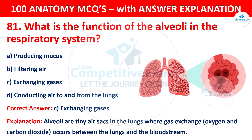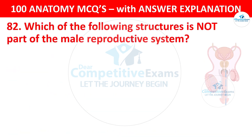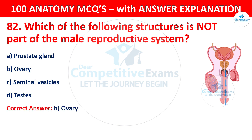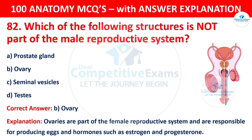Question number 82: Which of the following structures is not part of the male reproductive system? The options are: Prostate gland, Ovary, Seminal vesicles, or Testis. The correct answer is B — ovary. The ovaries are part of the female reproductive system and are responsible for producing eggs and hormones such as estrogen and progesterone.